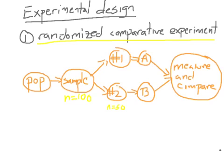You would measure each group — probably compute the average number of bites for group one and average number of bites for group two, then compare the difference. This is a typical picture for a randomized comparative experiment. Usually you draw this diagram listing the numbers of people in the groups, and then write a sentence or two explaining exactly what you mean by A and B — for example, give these 50 people mosquito repellent A, make them stick their hand in the tank, and measure the bites. So the picture is important, but often it's accompanied by a few sentences below.